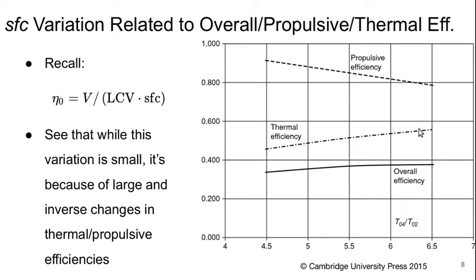The SFC variation is related to the change in the various efficiencies of the engine — both the overall, propulsive, and thermal efficiencies. Remember we can write overall efficiency as the flight velocity divided by the calorific value of the fuel times the SFC, so these are inversely proportional. The overall efficiency goes down as the SFC goes up when we lower T04 over T02. It doesn't vary a lot because of opposite significant changes in propulsive and thermal efficiency: thermal efficiency goes up significantly with increasing T04 over T02, but the propulsive efficiency goes down.